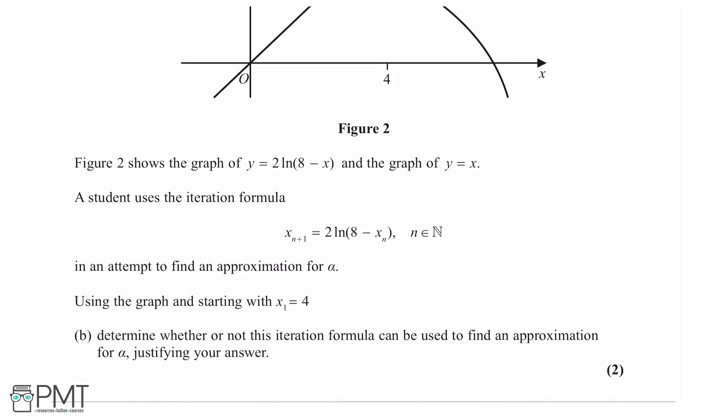This question says, using the graph and starting with x_1 equals 4, determine whether or not this iteration formula can be used to find an approximation for α, justifying your answer. We are told we need to use the graph provided and that the first x value is 4. We need to determine whether or not the iteration formula can be used to find an approximation for α and justify our answer.